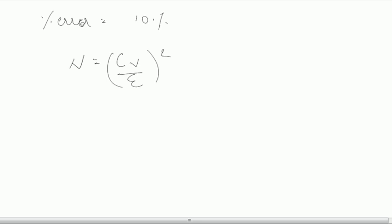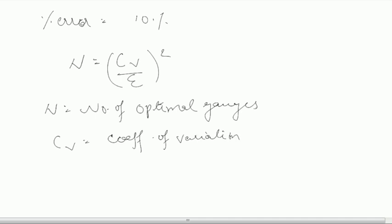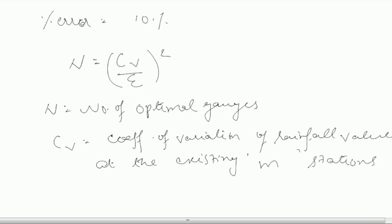For this 10% error, we calculate N, and N is your number of optimal gauges. That is given by CV upon epsilon whole square. N will be equal to number of optimal gauges. CV will be equal to coefficient of variation of rainfall values at the existing M stations, and epsilon is the allowable degree of error.